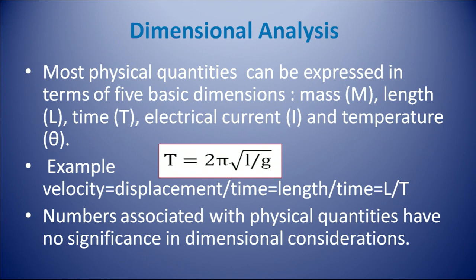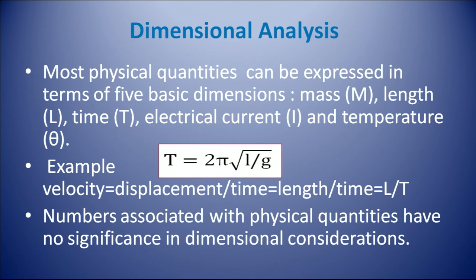T equal to 2π root over L by G. Here L is for length and G is acceleration due to gravity. You can express acceleration due to gravity G as length divided by time square. So this expression can be expressed in terms of length and time. For another example, velocity is equal to displacement divided by time. Displacement is length and time, so we can express velocity also in terms of length and time.